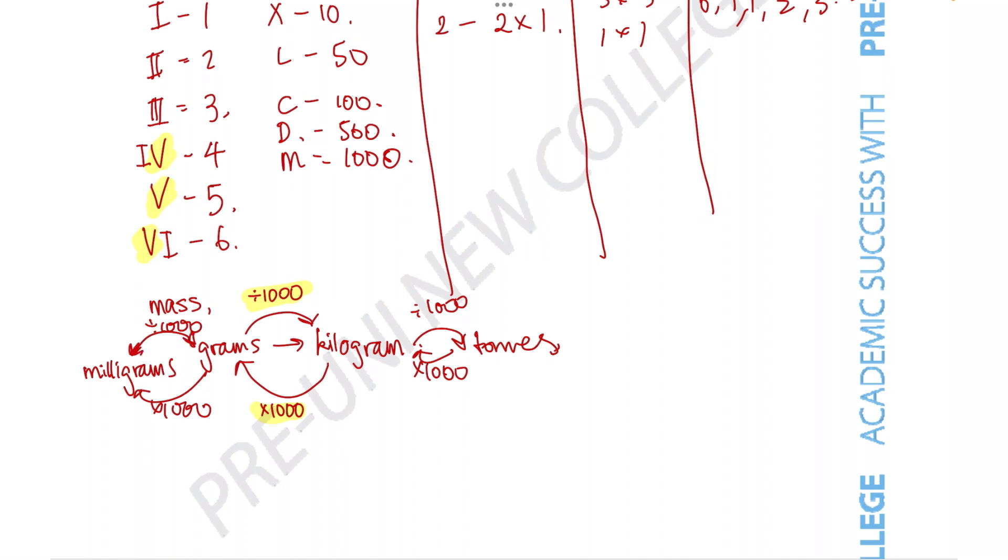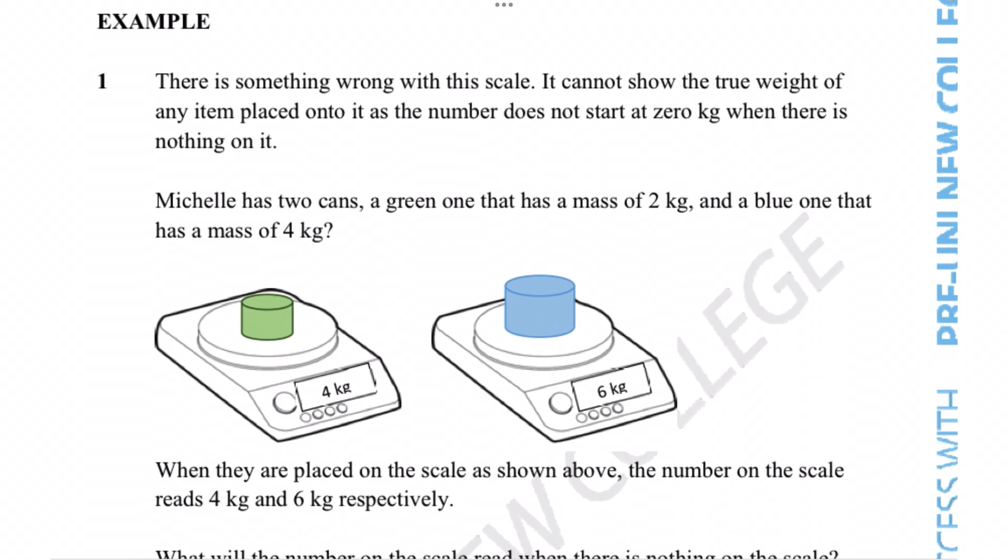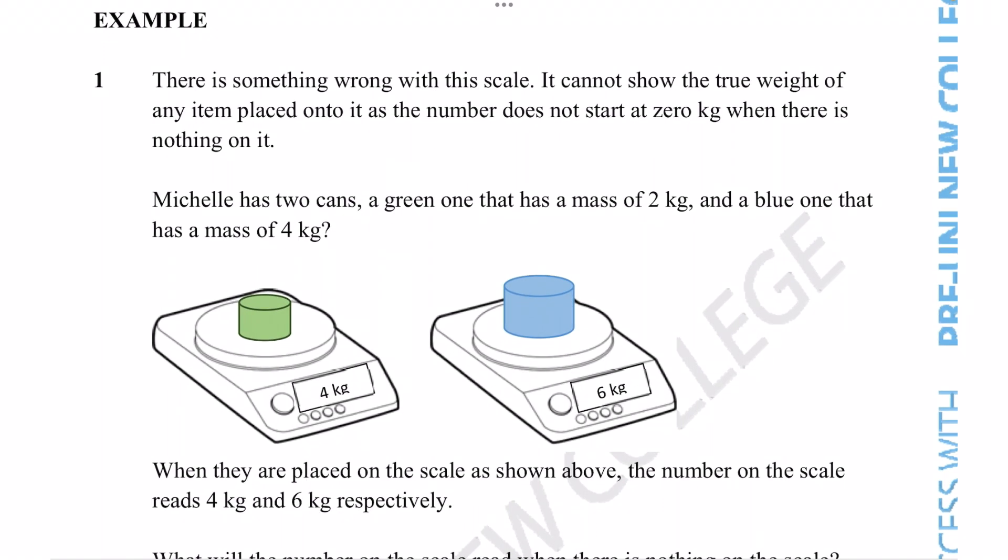Okay so that is fairly straightforward. Number knowledge for mass just requires us to understand mass as a concept, so as soon as we understand that mass is just how heavy something is, we can usually work out these questions without too much trouble. So let's see if we can do so by tackling this example question.